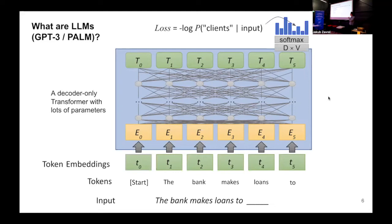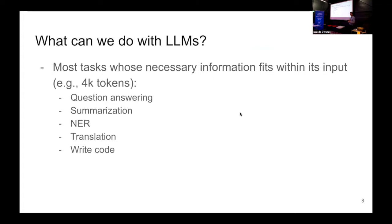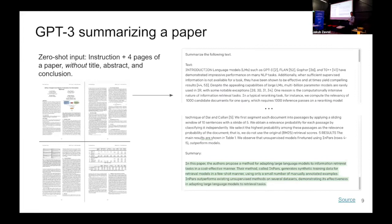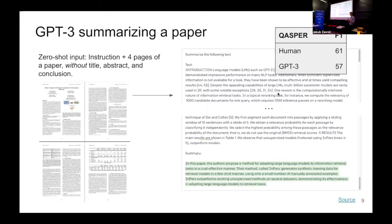What you can do with them is basically whatever you can feed into these 4,000 tokens — question answering, summarization, named entity recognition, translation, and code writing. For example, I took a paper Marzi just presented, selected everything except the title, abstract, and conclusion, gave it to GPT-3 with the prompt 'summarize the following text,' and the model generated a solid summary. On the CASPER dataset, humans get 61 F1 and the latest OpenAI model gets 57, so if the text fits in the model input we can answer questions quite reliably.